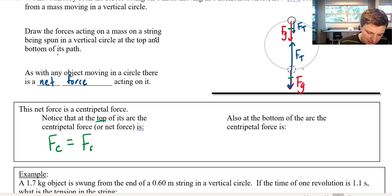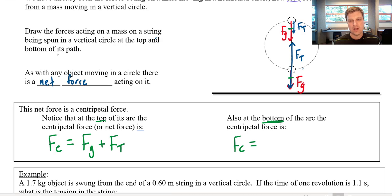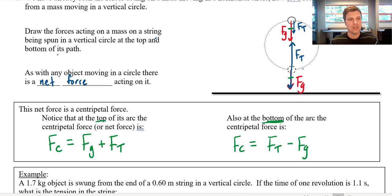So at the top, FC equals FG plus tension — they're both working downwards. But at the bottom of the arc, I would have my centripetal force as winners minus losers. I'm going to take the tension force as the winner and gravity as the loser, so it's FT minus FG. I'm defining the winning direction as being towards the center of the circle, because whenever something moves in a circle, the net force — the centripetal force — pulls towards the center of that circle.